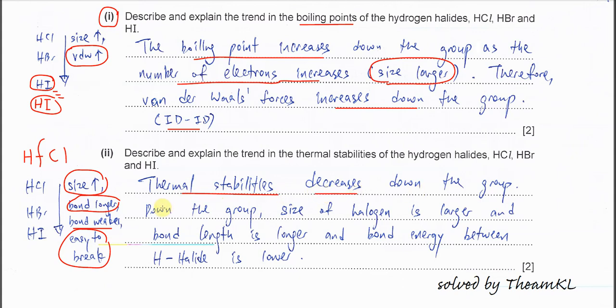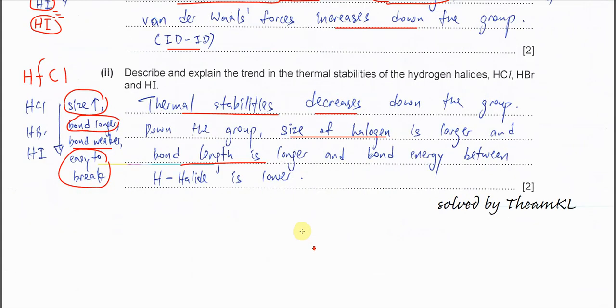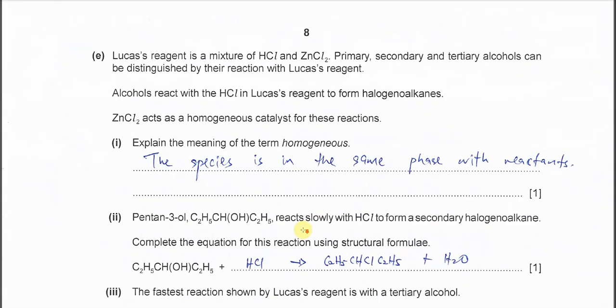You just explain down the group what happened. Size, halogen larger, bond length is longer, bond energy between the H and the halide is lower. So easy to break.